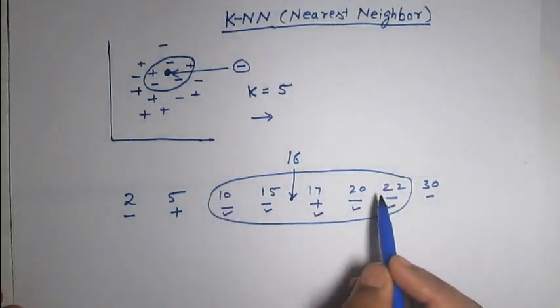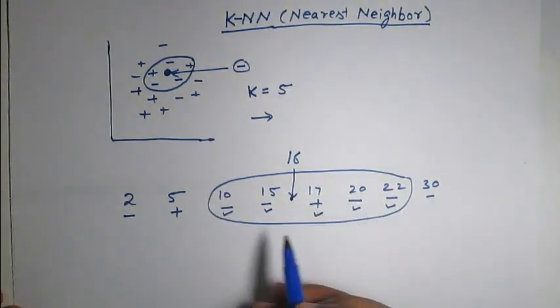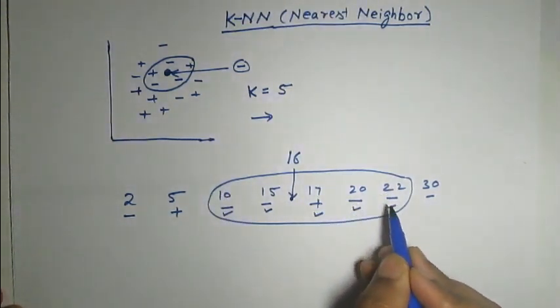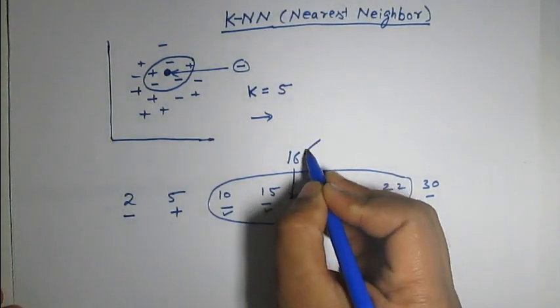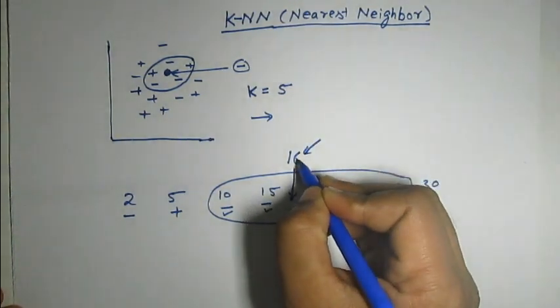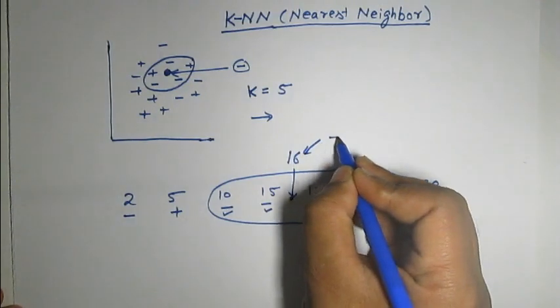And out of these 5 nearest neighbors we can see the 4 examples are belonging to minus class. So, according to the rule we will assign this unknown data point 16 the label of minus.